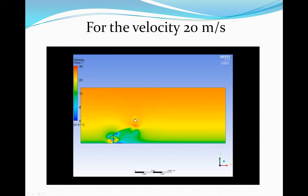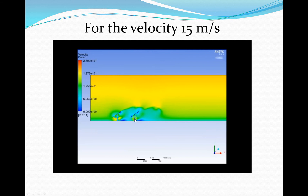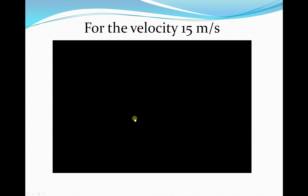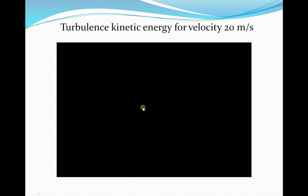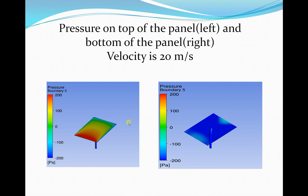This shows one panel — you can see how the velocity looks on the downstream side and the vortex turbulence behavior. For two panels at 15 meters per second you can observe the interaction effects. This next result shows the turbulent kinetic energy at 20 meters per second. This is very important because we want to know how much pressure acts on the solar panel at different velocities.